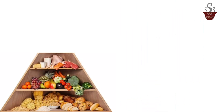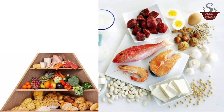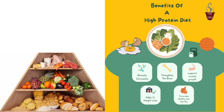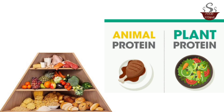Protein — third level. Includes meat, poultry, fish, beans, peas, and nuts. Important for muscle development, repair, and overall body function. Encourages lean protein sources and plant-based alternatives.